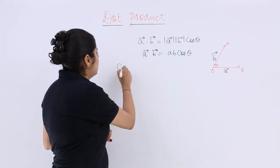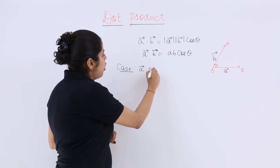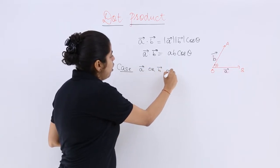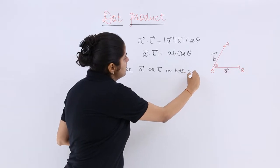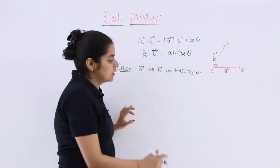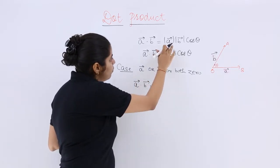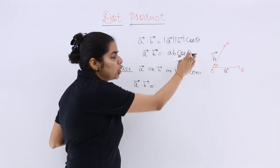So we are going to consider a case where either A or B or both are 0. So what will be the effect on the scalar product? A dot B is equal to mod A mod B cos theta.